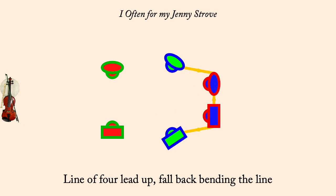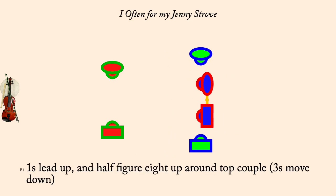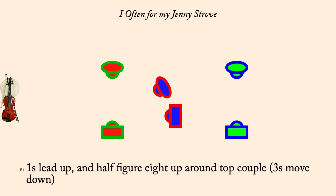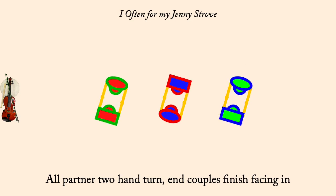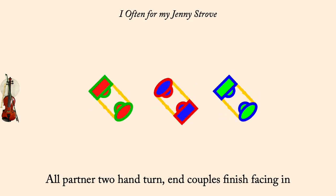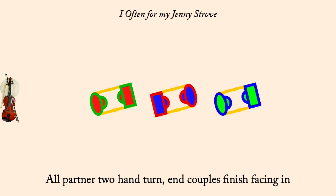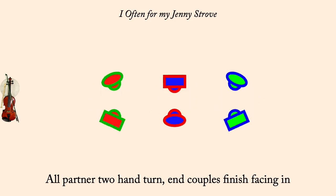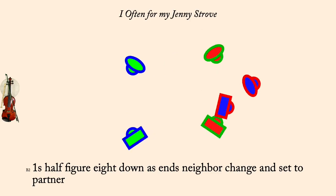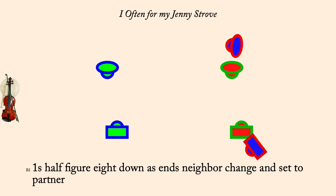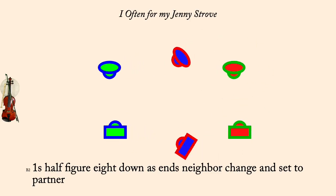Ones lead up and half figure eight through top couple as threes move down. All, partner two-hand turn. Ones half figure eight down as Ann's neighbor change and partner set. All, partner two-hand turn.